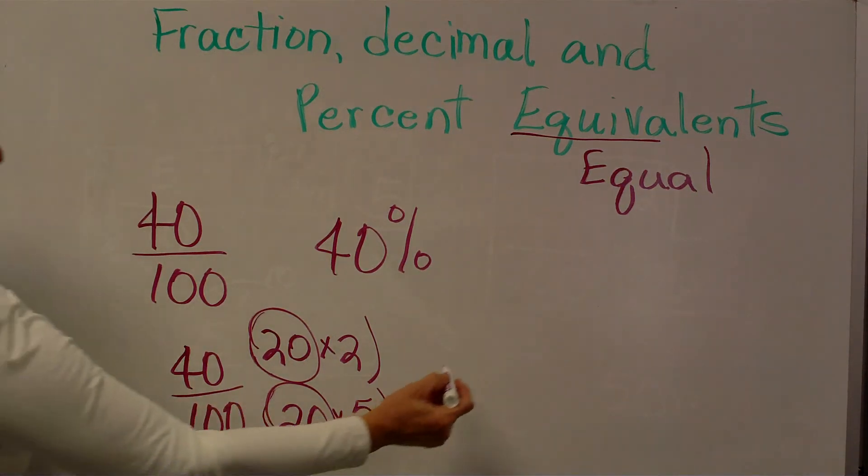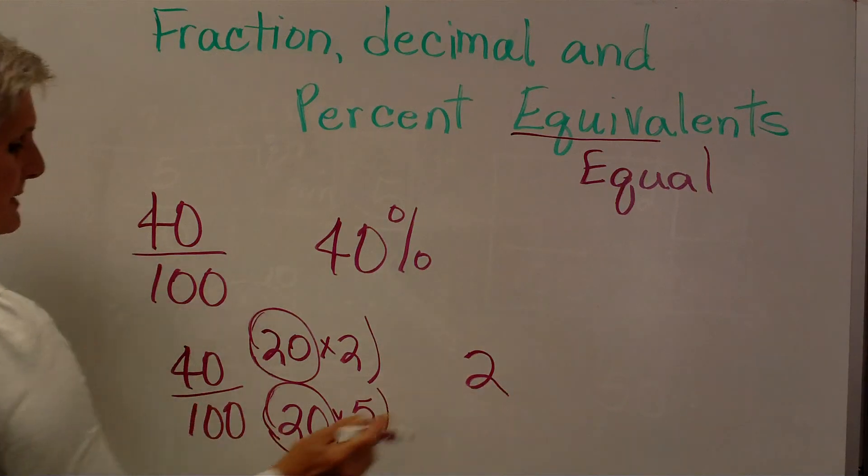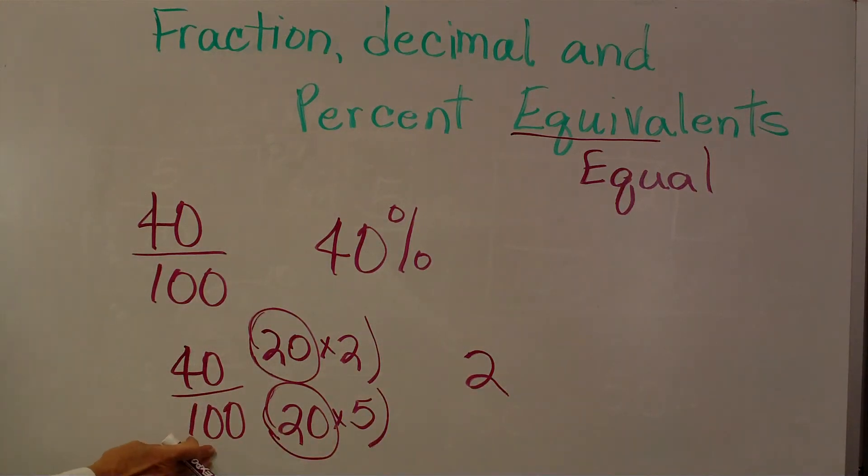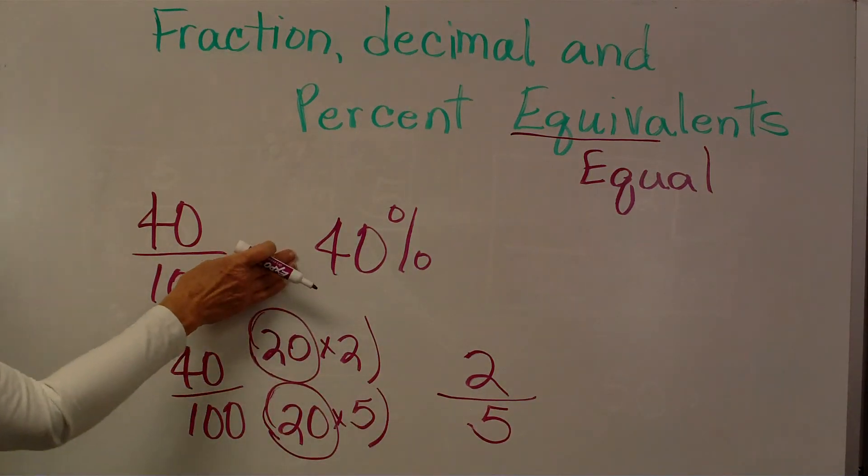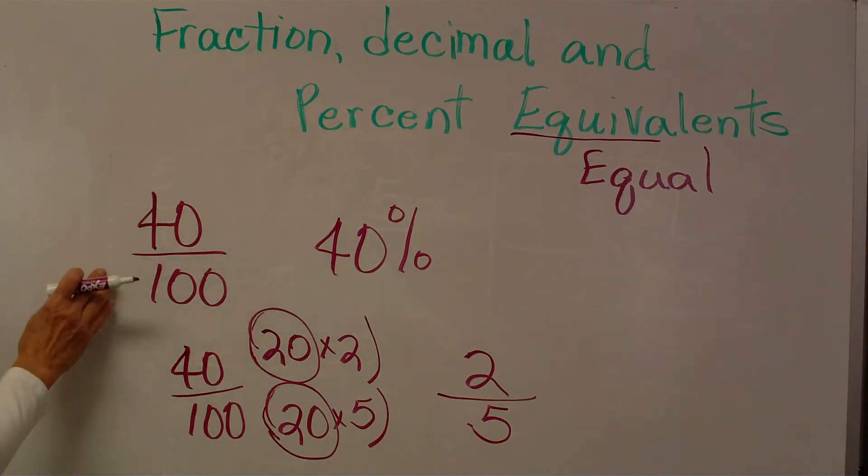20 will go into 40 two times. 20 will go into 100 five times. I now have simplified my percentage of 40 to a fraction 40 over 100.